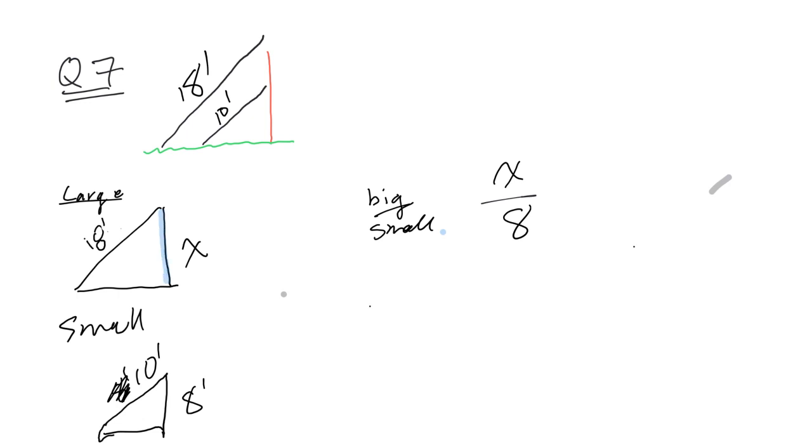So these are corresponding, and then we have our corresponding hypotenuses, i.e. the ladder lengths. So the one ladder is going to be 18 over 10.